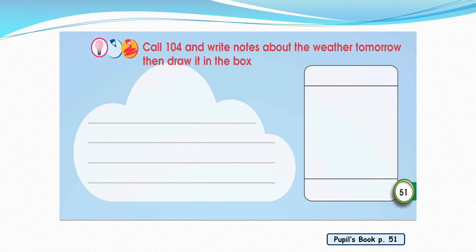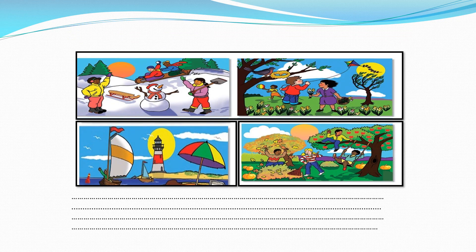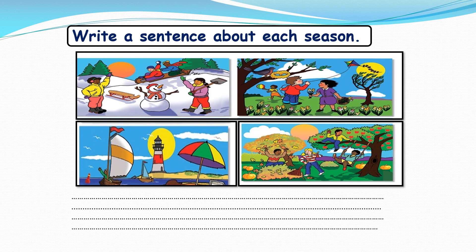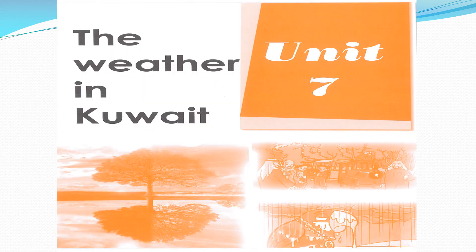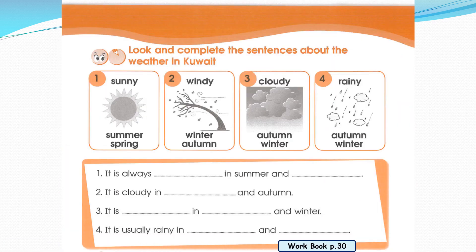Here, you want to call 104 and write notes about the weather tomorrow, then draw it in a box. Now write a sentence about each season. Let's write them and go to the workbook. Open your workbook page 30 — look and complete sentences about weather in Kuwait.